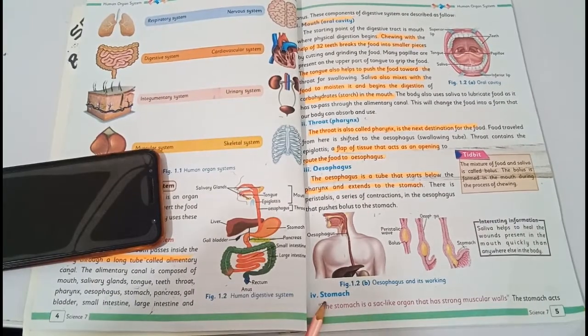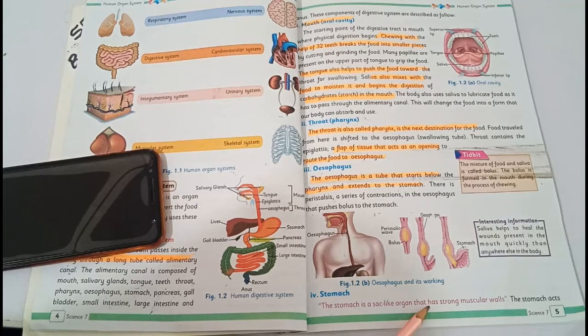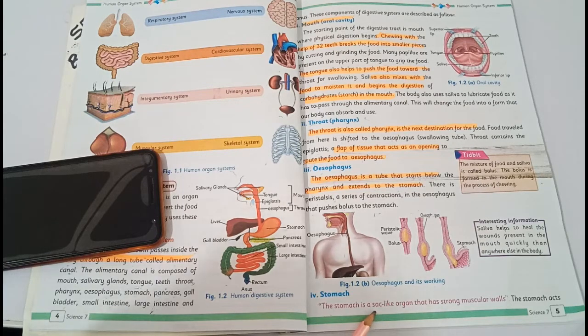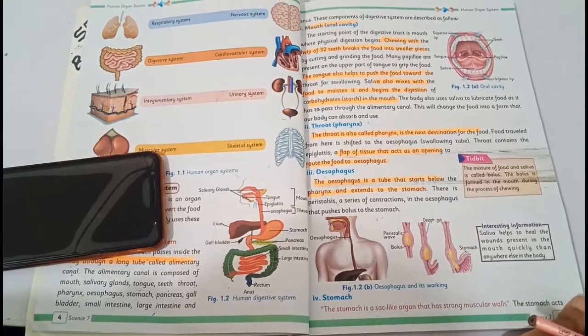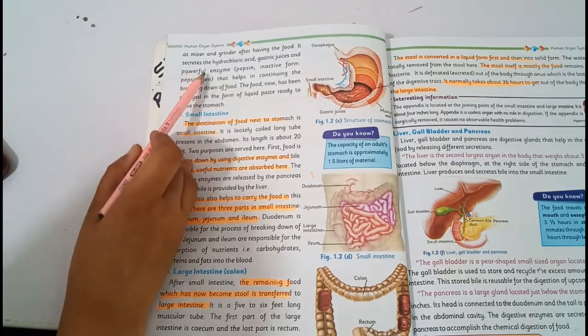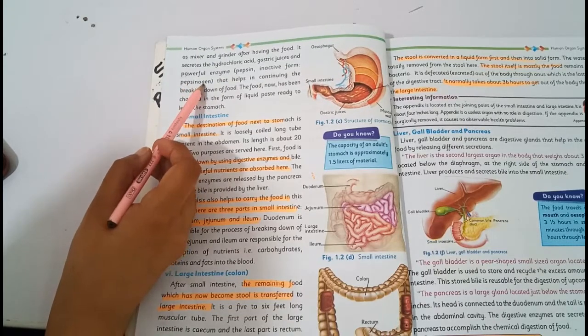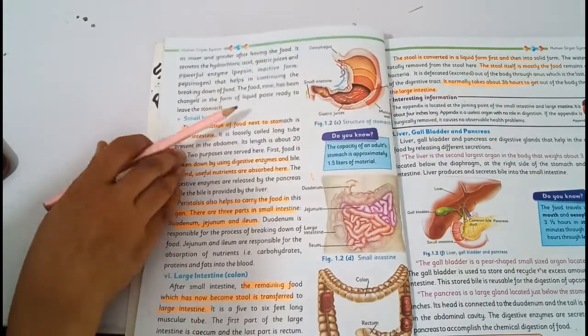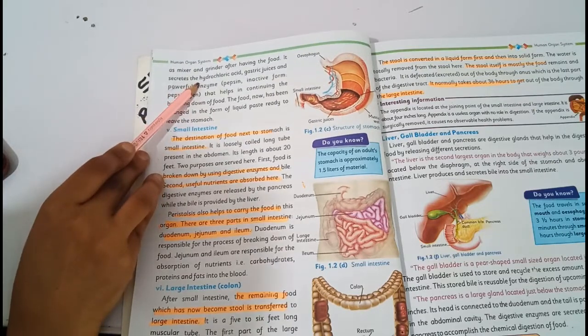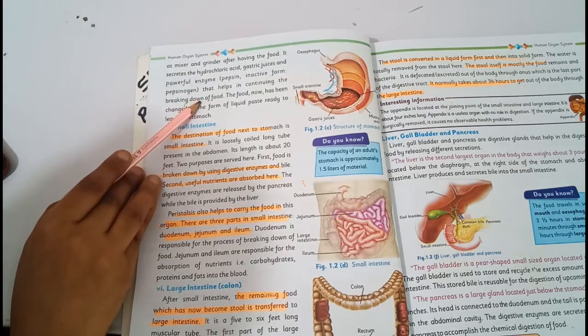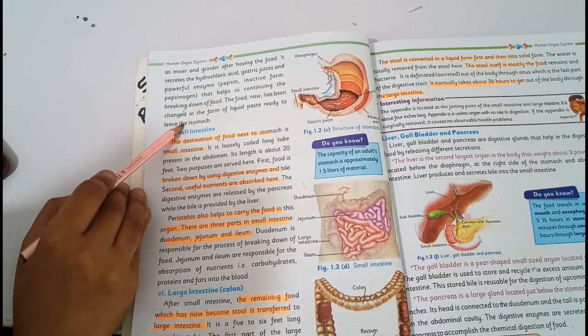The next organ is stomach. Stomach is a sac-like organ that has strong muscular walls. It secretes hydrochloric acid, gastric juice and powerful enzymes like pepsin in an inactive form of pepsinogen that helps in continuing the breaking down of food. The food has been changed into a liquid paste ready to leave the stomach.